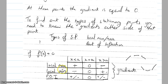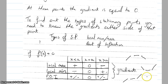For a point of inflection, we'll either have a positive gradient, a zero gradient, and then another positive gradient — or a negative gradient, a zero gradient, and then another negative gradient. These are the ways we identify whether a stationary point is a local minimum, local maximum, or point of inflection.